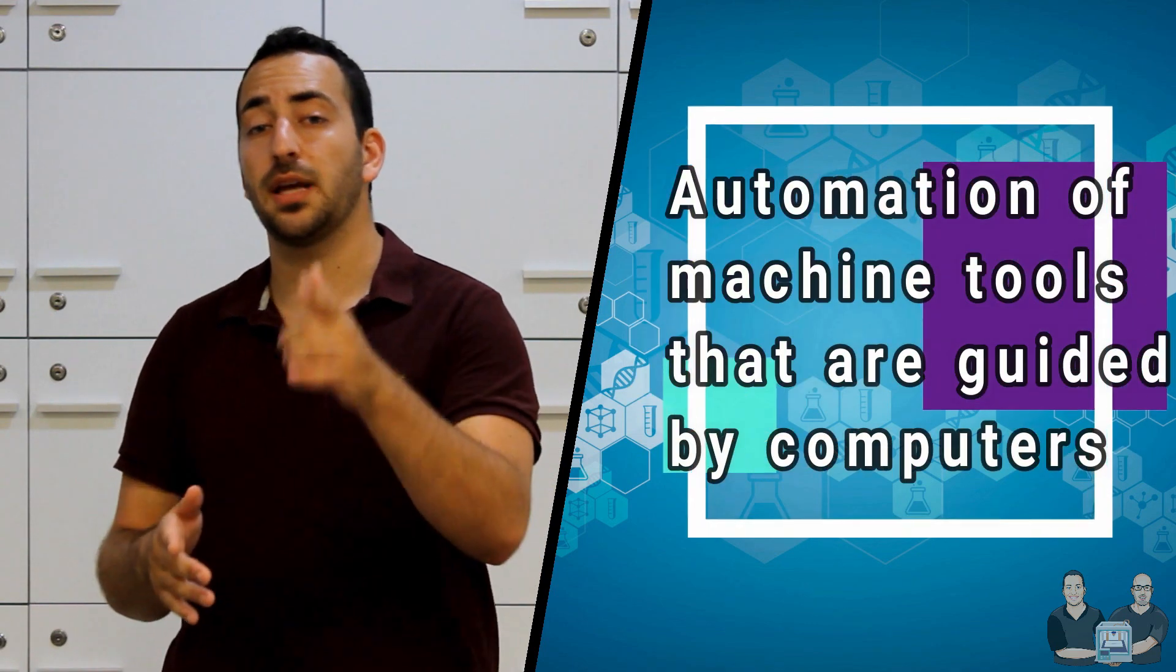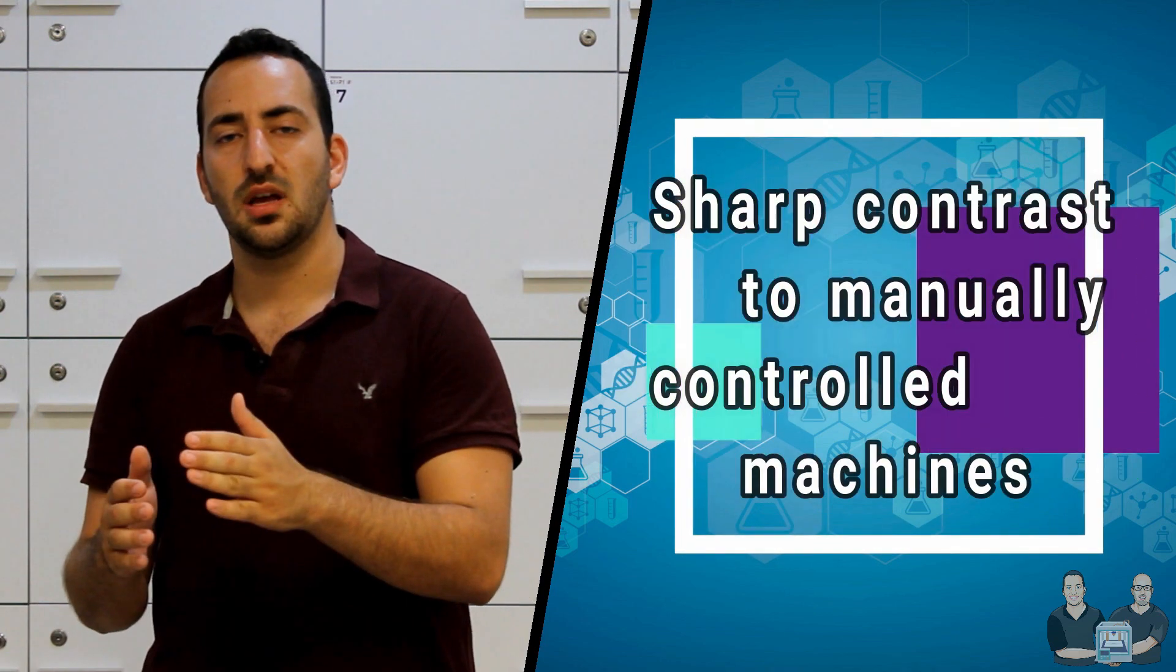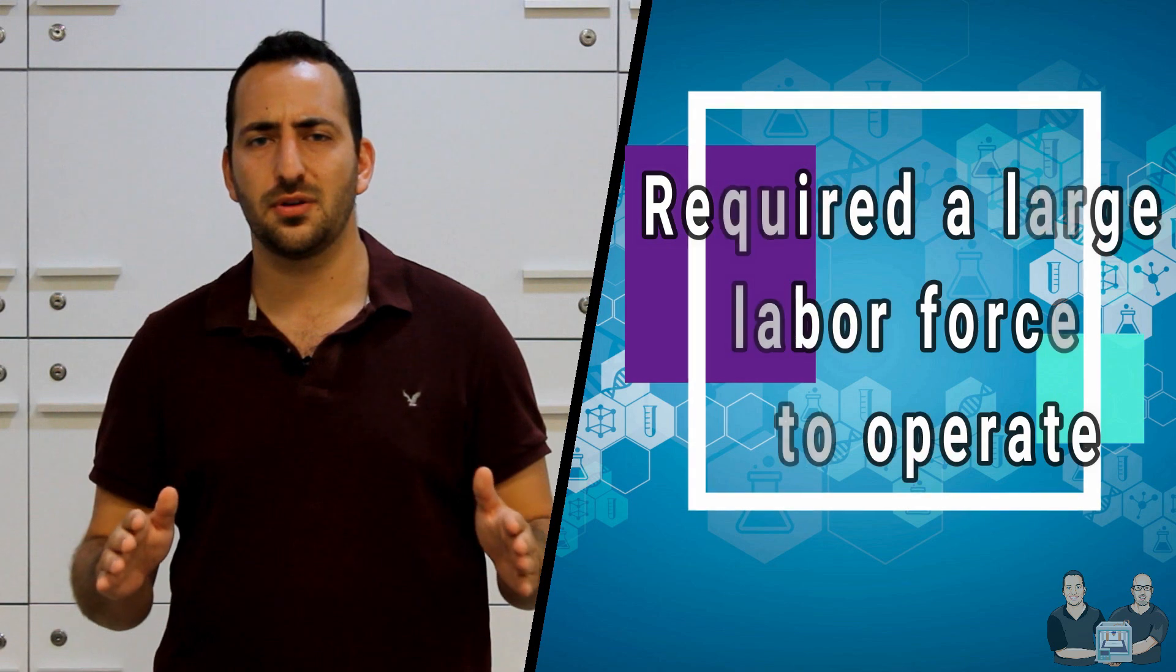CNC is the automation of machine tools that are guided by computers, which execute pre-programmed sequences of machine control commands. This is a sharp contrast to manually controlled machines that were very popular during the first and second industrial revolutions. Those required a large labor force to operate.